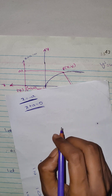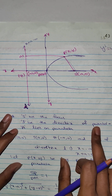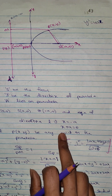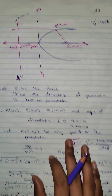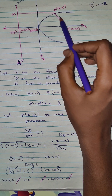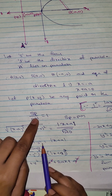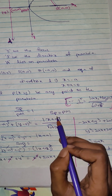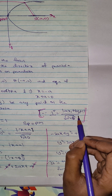For the parabola with origin, the directrix equation is x plus a equals to zero. Let P be any point on the parabola. For eccentricity of a parabola, SP equals to PM, where SP is the distance from focus S to point P, and PM is the perpendicular distance from P to the directrix. We apply the perpendicular distance formula: mod of (ax₁ + by₁ + c).